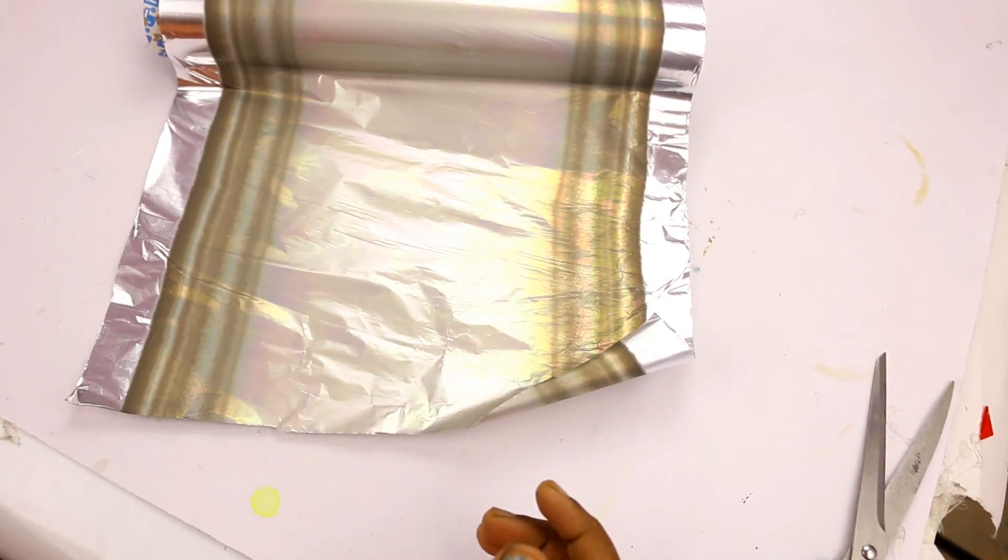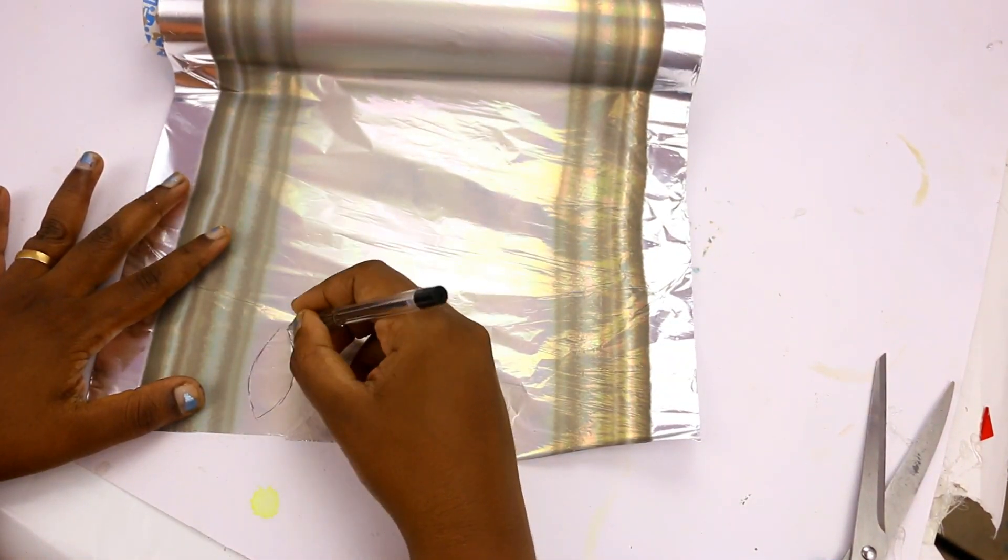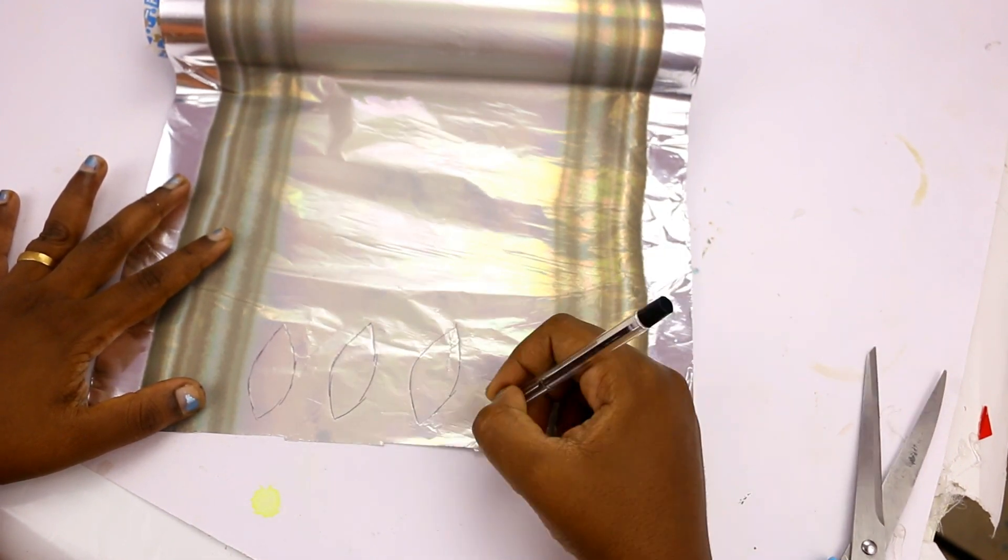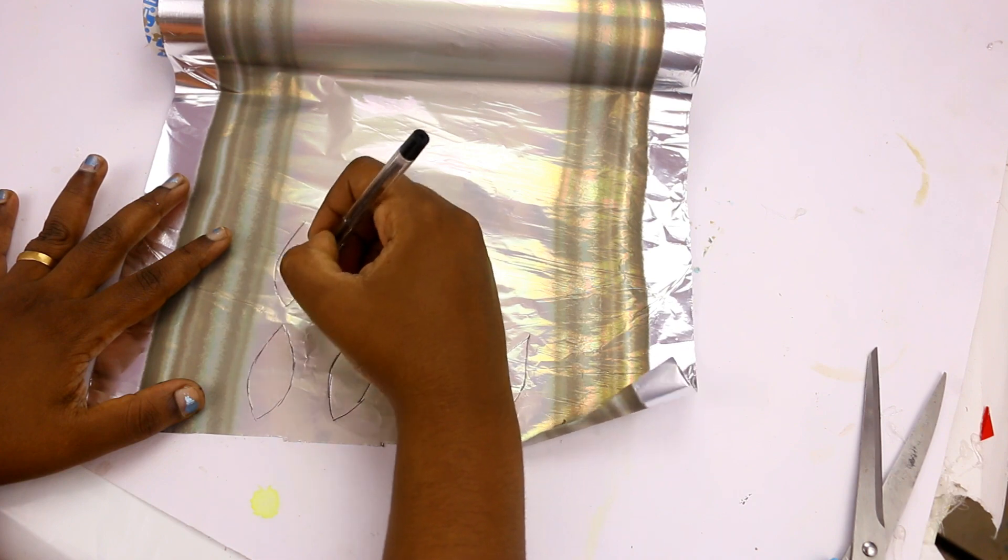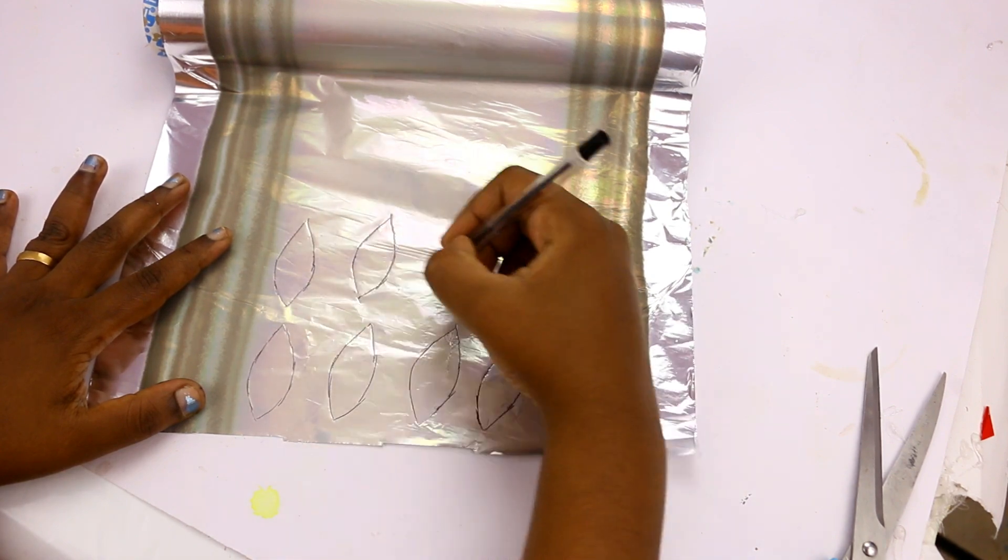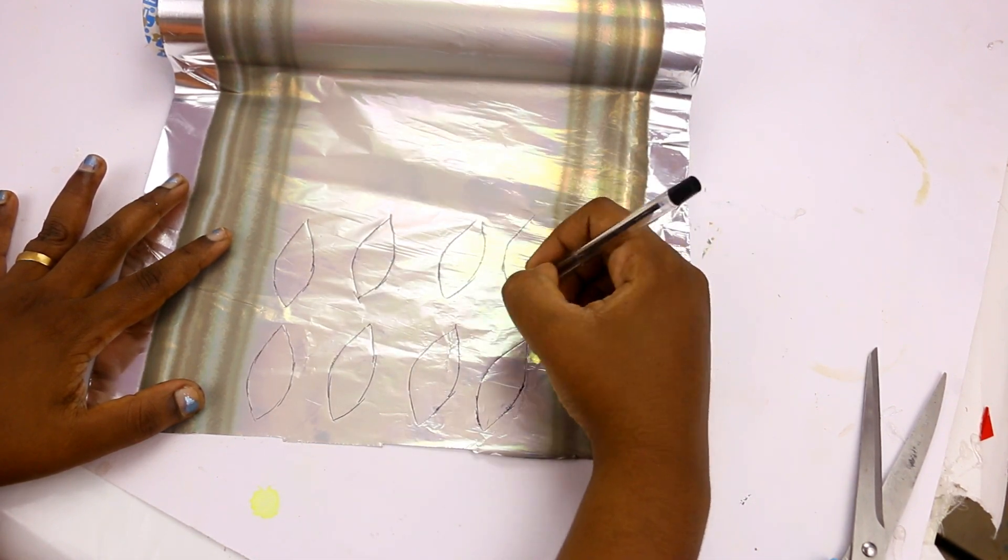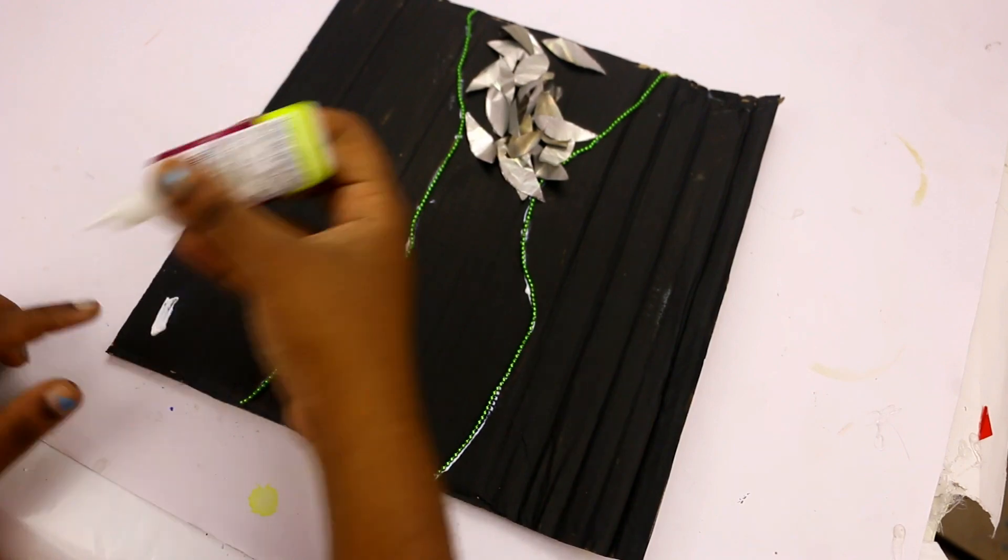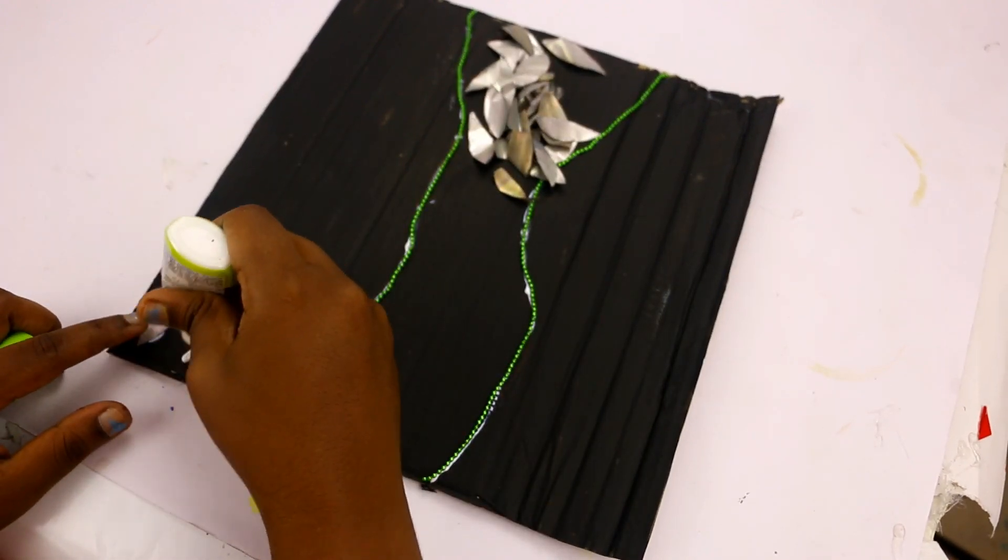This is aluminum foil that is used for food, so I will use it for craft. This is the design of the petals. It is very simple. If you want to make a flower, it will be very simple.